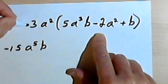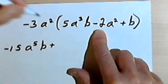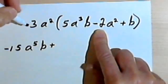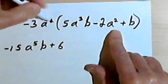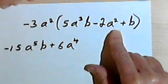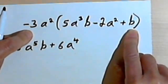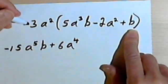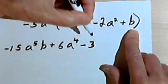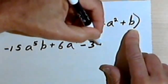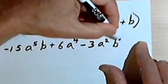Now I've got to multiply negative 3a squared times negative 2a squared. I've got a negative times a negative, so I have a positive. Negative 3 times negative 2 is positive 6. a squared times a squared — adding the exponents, 2 plus 2 is 4 — so I get a to the fourth. Then for the last term in my polynomial, I've got just a b, so I'm multiplying negative 3a squared times b. That gives me negative 3, the a squared remains a squared, and the b remains a b.